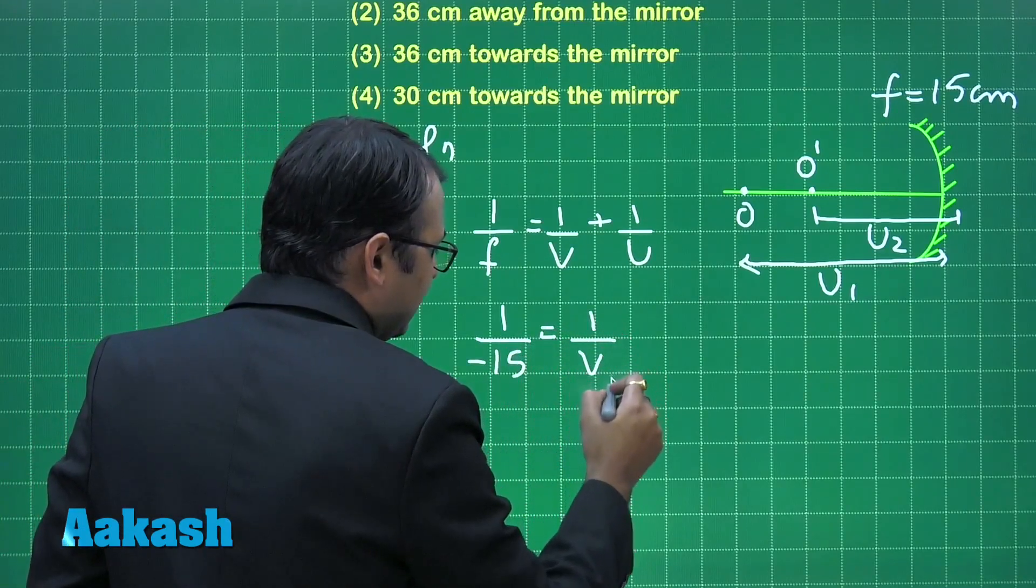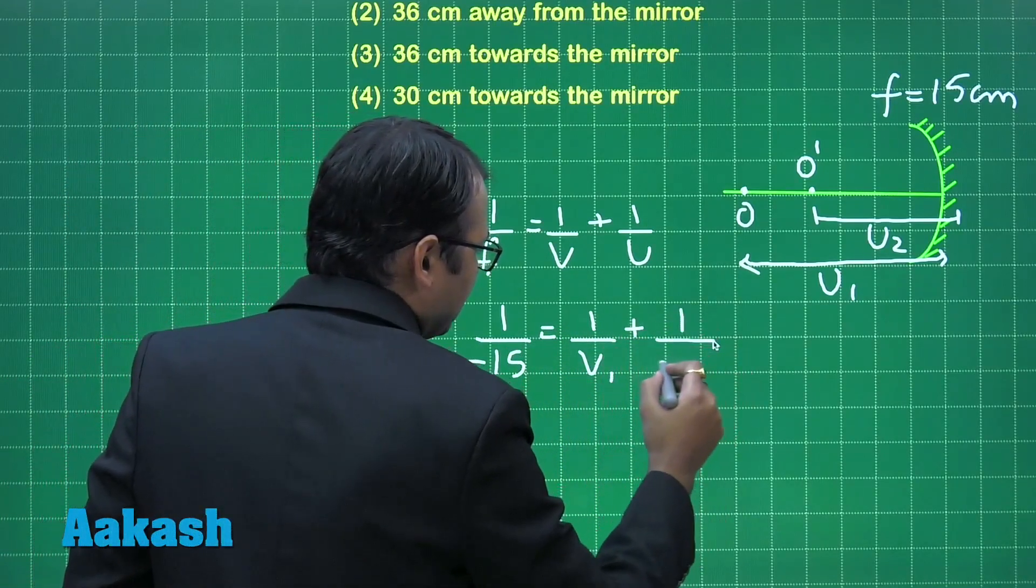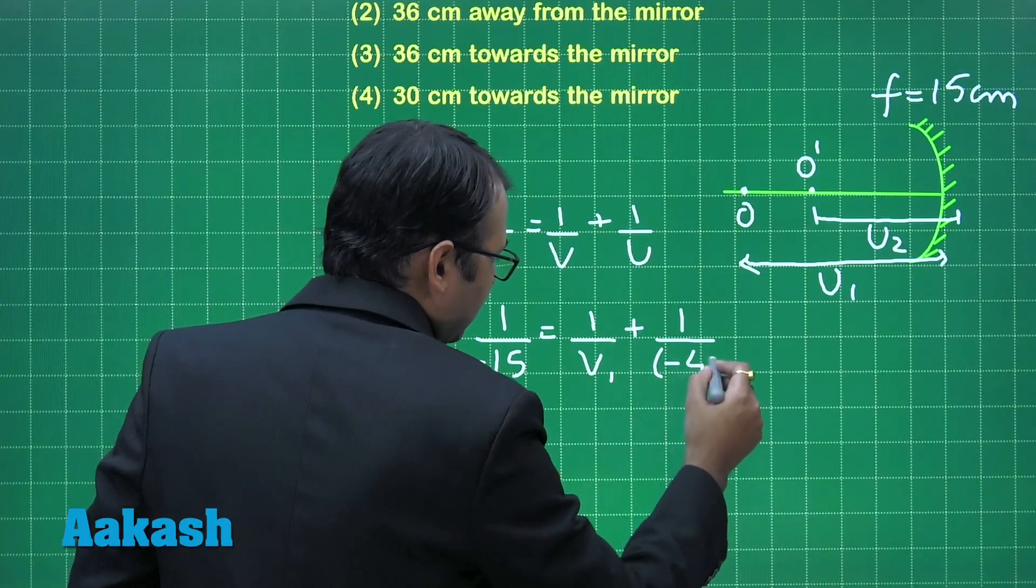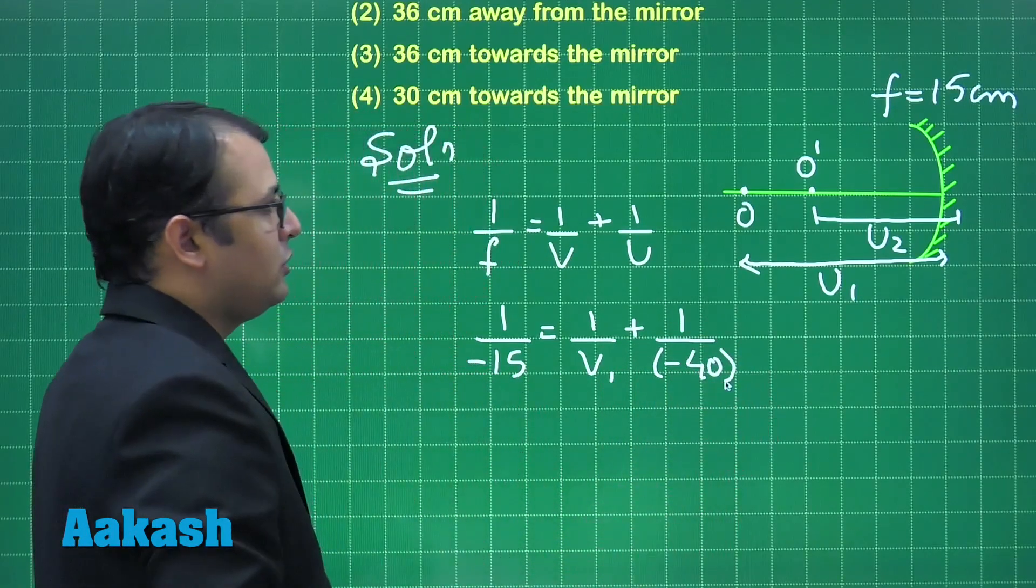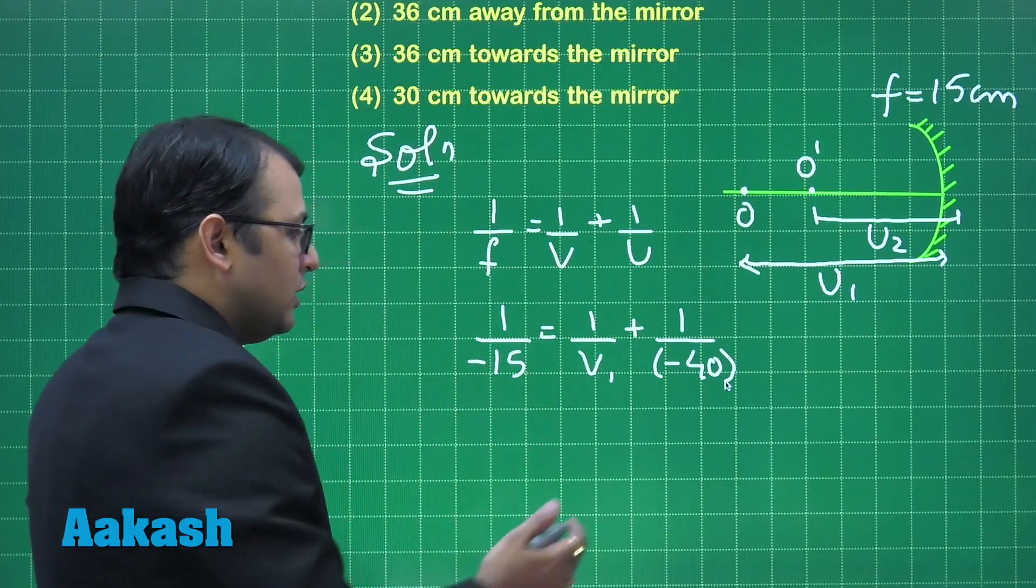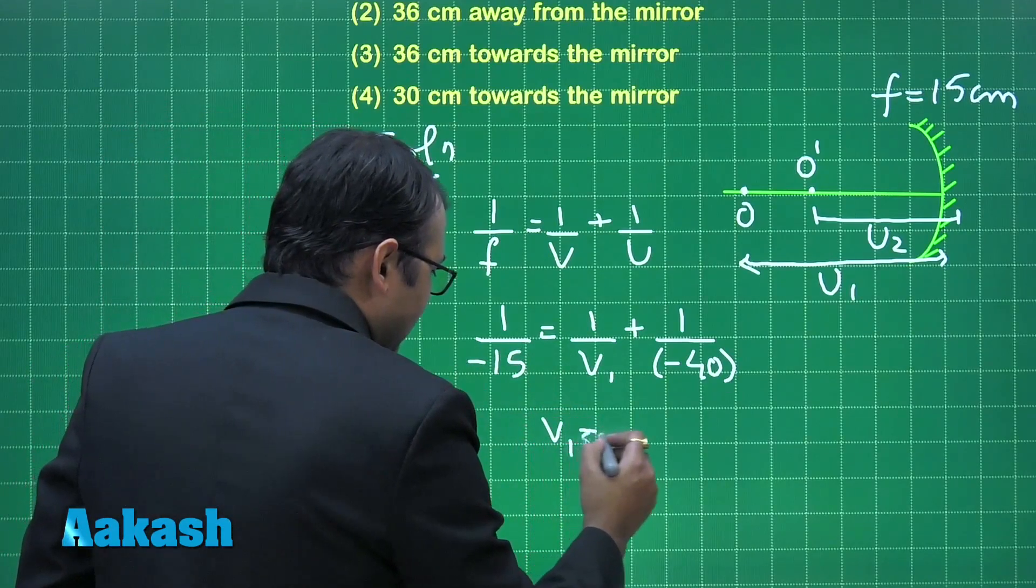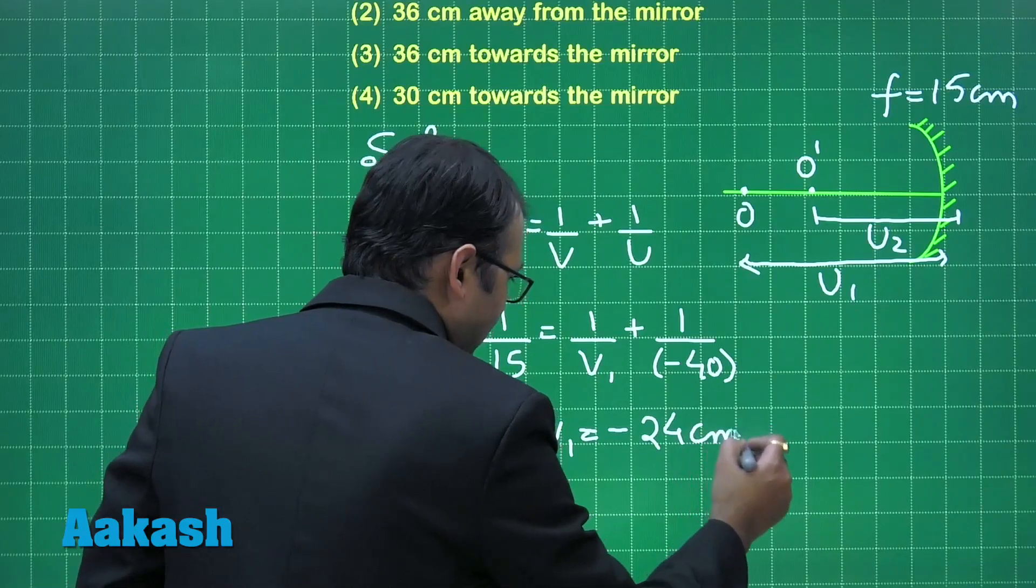We don't know v1. The value of u1 we know, that is minus 40 cm, given in the question. From here, if we calculate the value of v1, it becomes minus 24 cm.